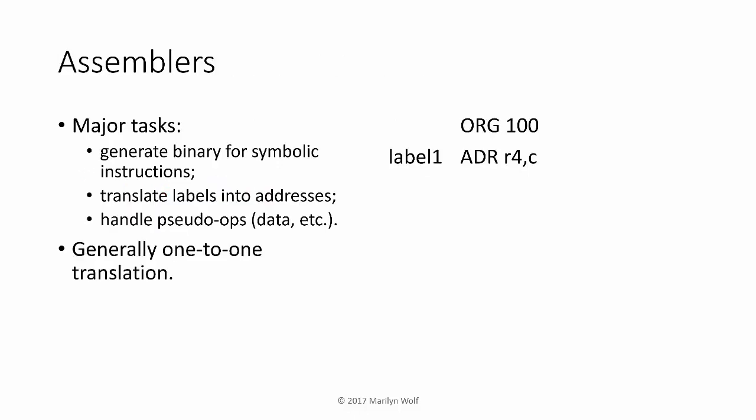Assemblers perform several important tasks: they generate binary code for symbolic instructions, they translate labels into addresses, and they handle pseudo-ops — statements that do not directly generate code. Although pseudo-ops do perform some important steps, generally speaking assembly is a one-to-one translation. In contrast, high-level language compilation can generate many instructions from a single statement.